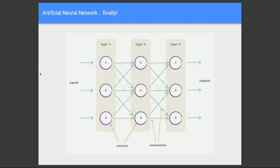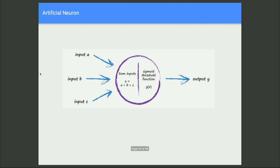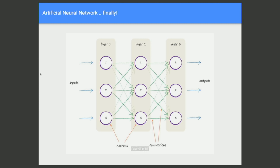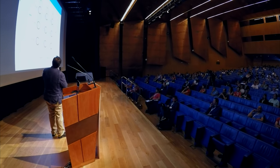After all that, we've finally got a neural network. An artificial neural network is our attempt to recreate what biological brains are doing. Each of those circles is collecting the signals, applying the threshold function, and passing on the output. By convention we call these layers — we have an input layer, a middle layer, and an output layer, with connections between them.